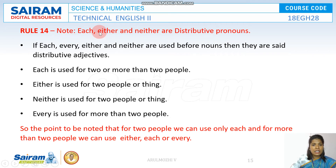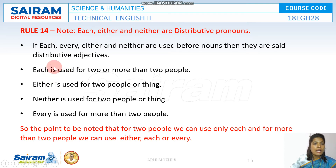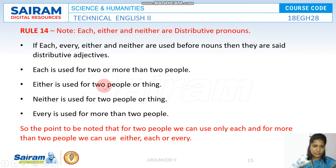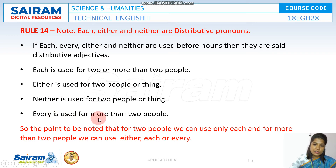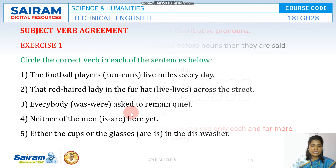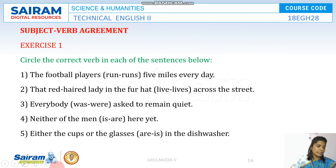Note the distribution of these pronouns: 'each' is used for two or more people; 'either' is used for only two people; 'neither' is used for two people; and 'every' is used for more than two people. Please keep this in mind whenever you use these words.